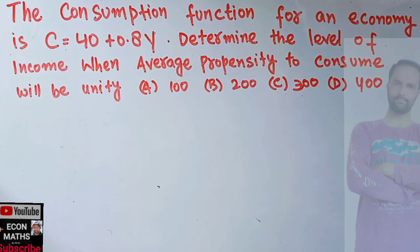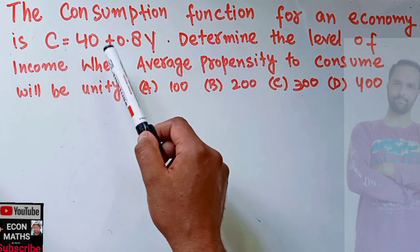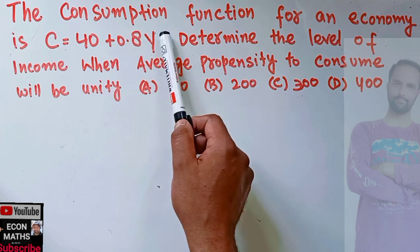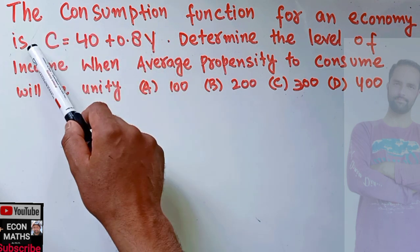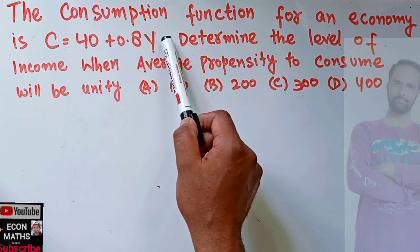In this video we will learn how to find the level of income when average propensity to consume is given. The question is: the consumption function for an economy is C = 40 + 0.8Y, where Y is the level of income, C is the consumption, 40 denotes the autonomous consumption when the level of income is zero, and 0.8 is the marginal propensity to consume.